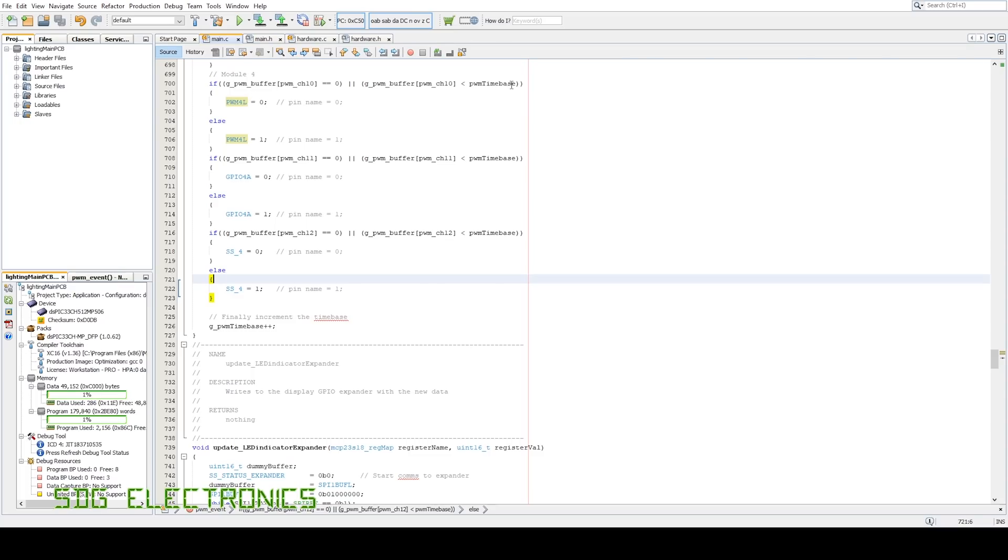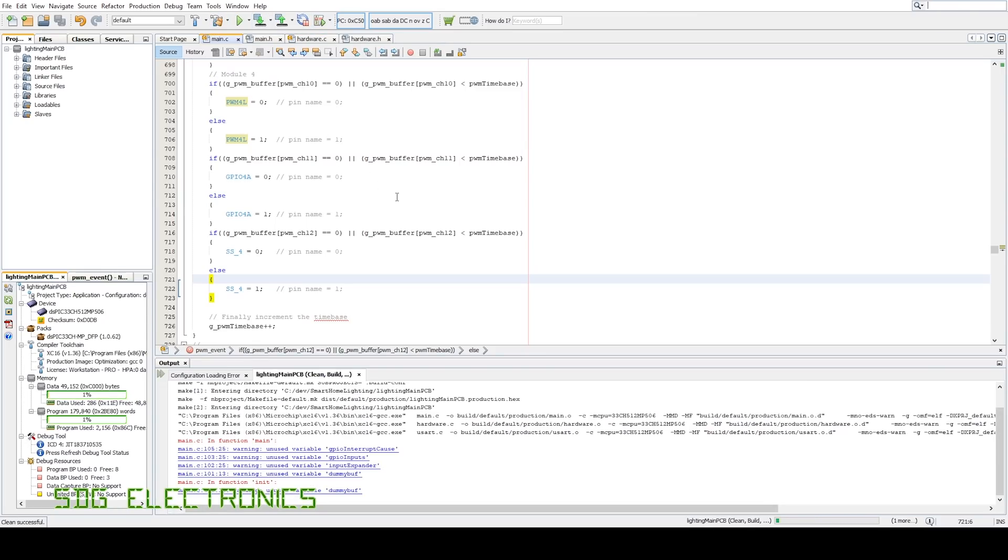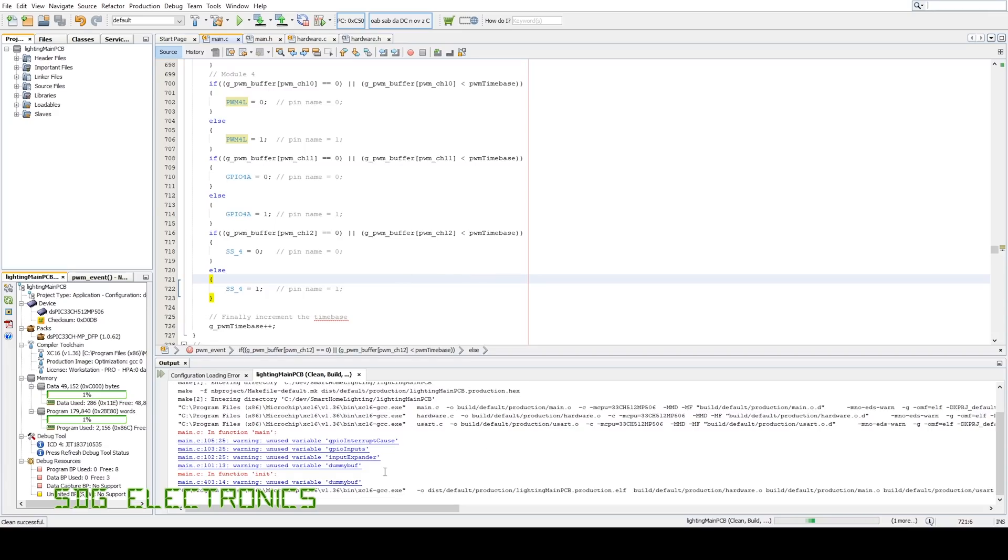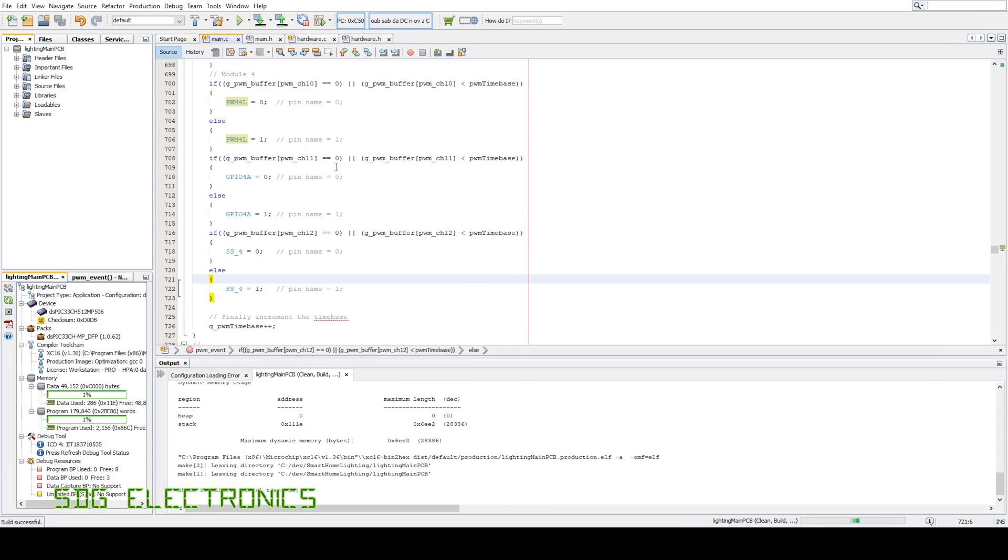If it's less than the PWM time base - that is the time base has gone higher than the PWM value - then we also set the output to 0. At all other times we turn on the output pin. It should build... we've got a couple of warnings because I've been playing with some variables that aren't used.